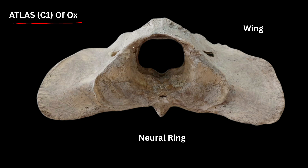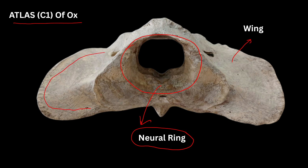If you see the atlas, you will find a large neural ring as compared to other vertebrae — the neural ring of the atlas is very large. You will also find two wings arising from either side of the neural ring. This is the typical feature of the atlas: a large neural ring and two wings.